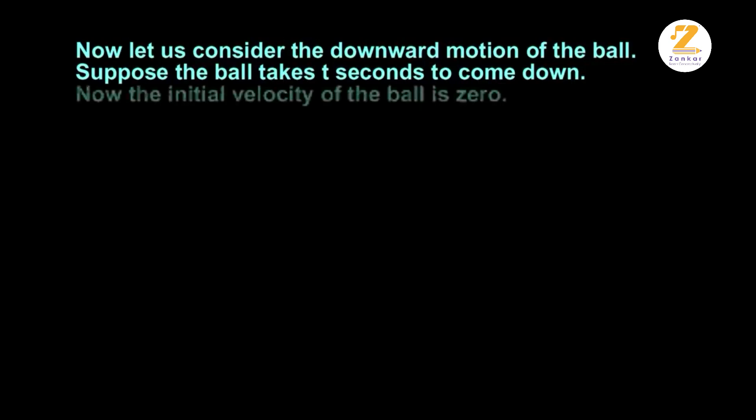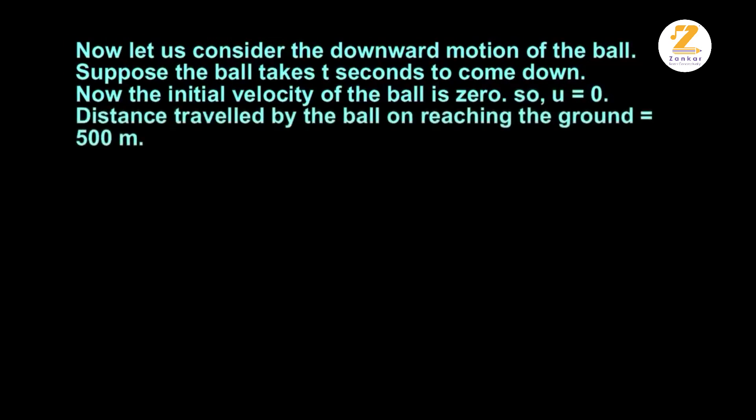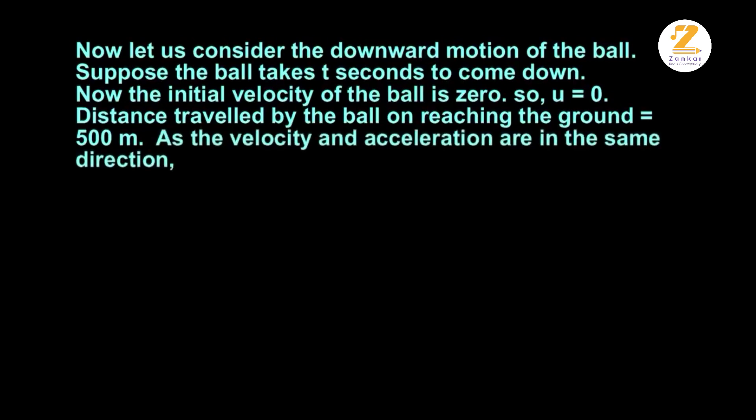Now, let's consider the downward motion of the ball. Suppose the ball takes t seconds to come down. Now, the initial velocity of the ball is zero. So u is equal to zero. Distance travelled by the ball on reaching the ground is 500 meter. And as the velocity and acceleration are in the same direction, a is equal to g is equal to 10 meter per second.